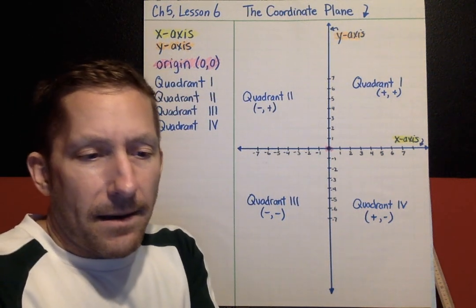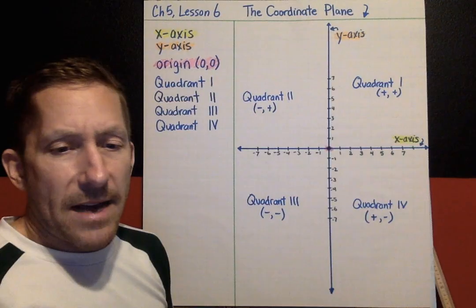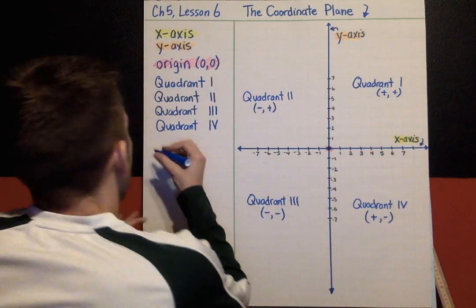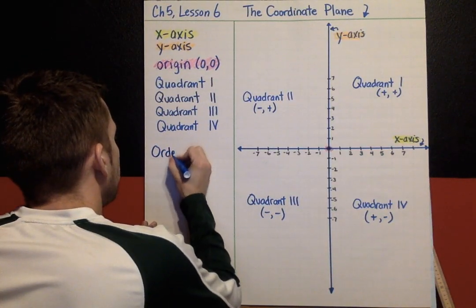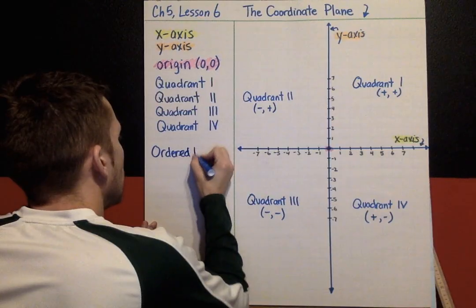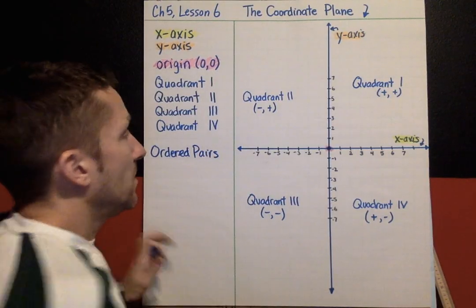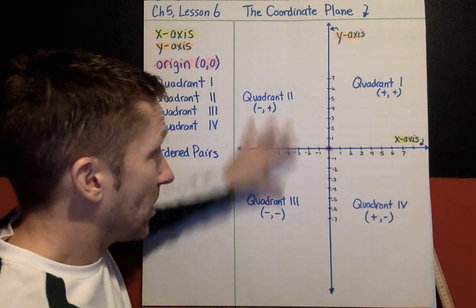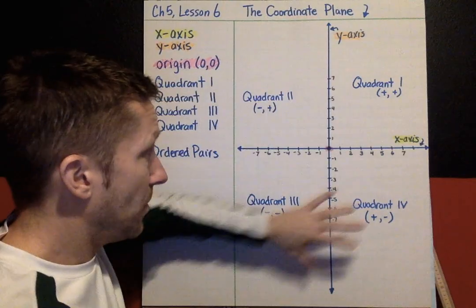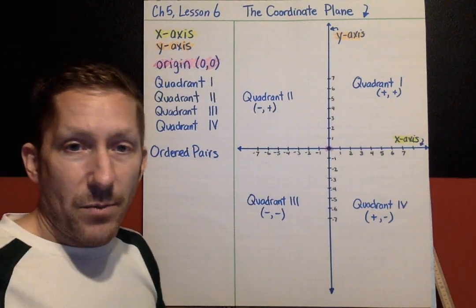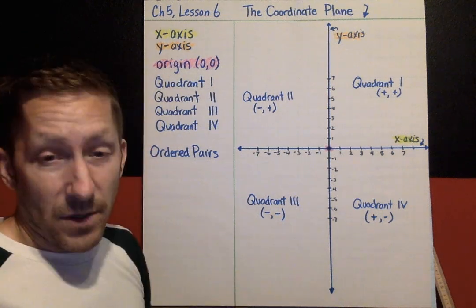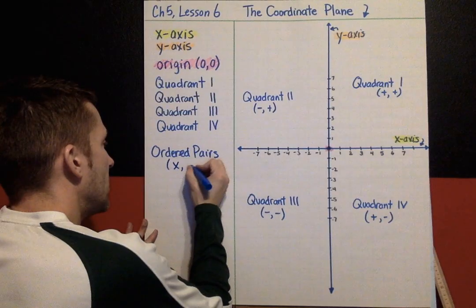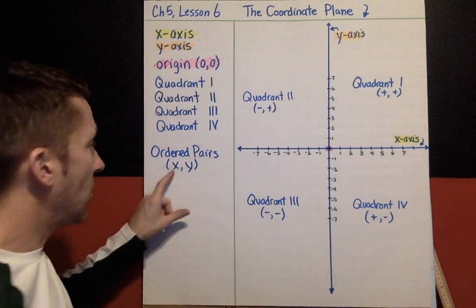Okay, next. We did axes, origin, quadrants. The next thing we're going to do is ordered pairs. The big idea today is knowing what a coordinate plane and its components are, and then how we put ordered pairs onto the coordinate plane. It is always x-coordinate, comma, y-coordinate — always, always, always.